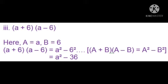Since 6² = 36, we get (a + 6)(a - 6) = a² - 36. Therefore, by multiplying (a + 6) into (a - 6), we get a² - 36.